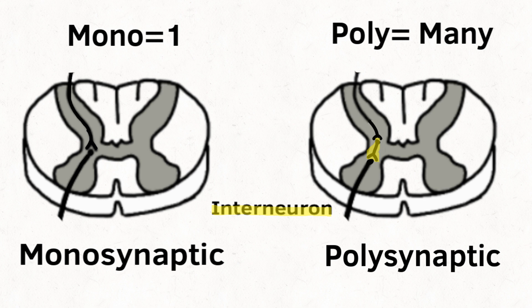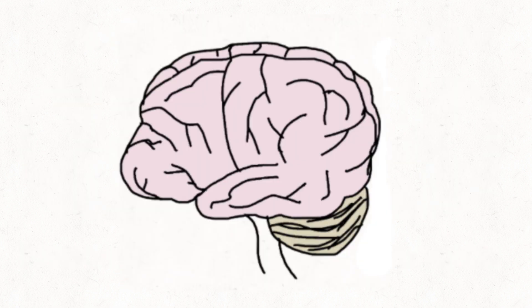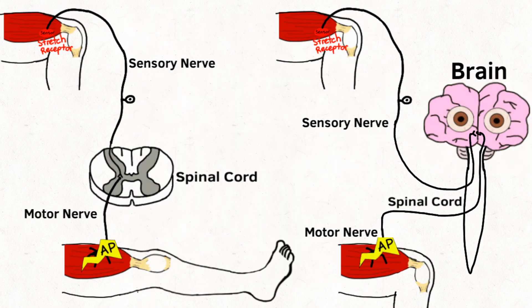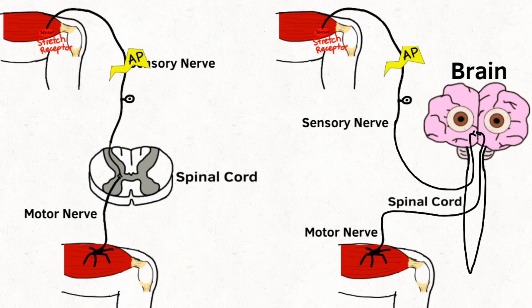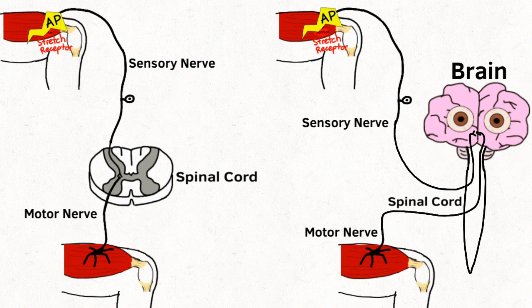Did you notice how the brain was not involved with the reflexes? This is because reflexes are unconscious responses to our environment, and therefore they don't require the brain to cause the action. Reflexes happen really fast. If the action potential had to travel all the way to your brain and then back to your muscle, the reaction would be much slower than just going to the spinal cord.